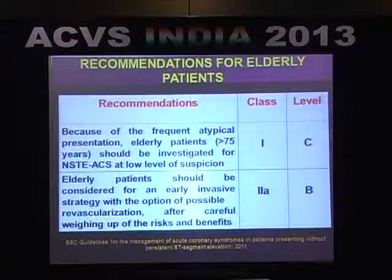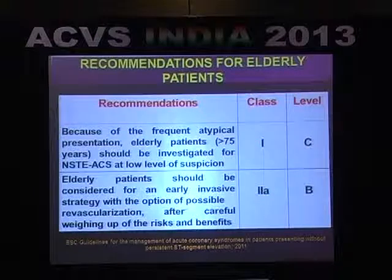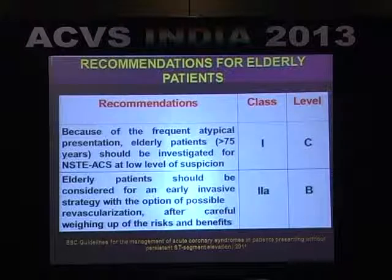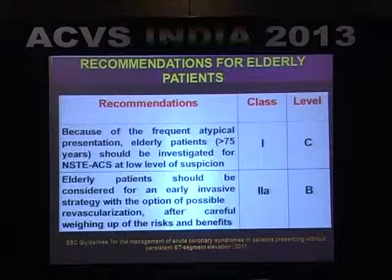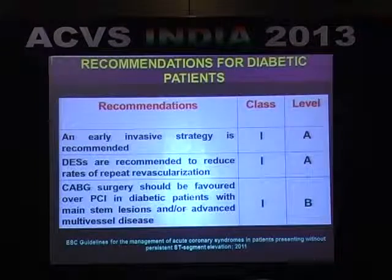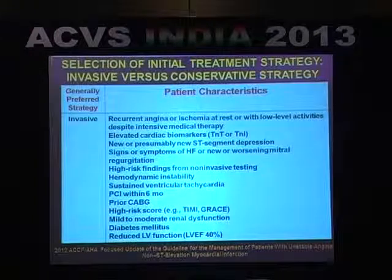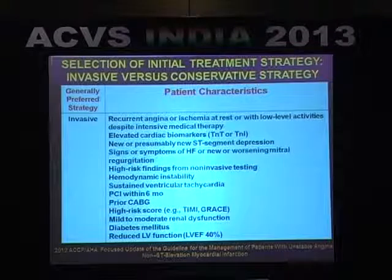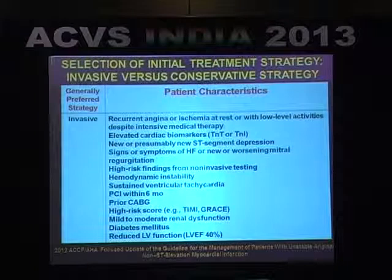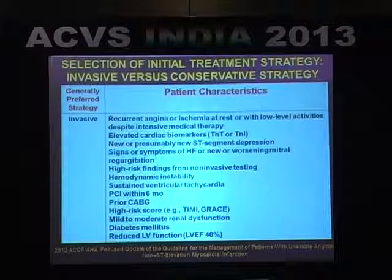In elderly patients with frequent atypical presentation, they should be investigated for ACS at a low level of suspicion, and should be considered for early invasive strategy with possible revascularization after careful weighing of risks and benefits. For diabetic patients, early invasive therapy is indicated. Similarly, the recently published ACC/AHA focused update of 2007 recommendations identifies high-risk criteria where patients meeting one or more of these criteria should undergo invasive procedure.